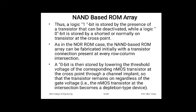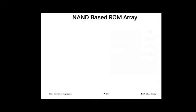A 0 bit is then stored by lowering the threshold voltage of the corresponding NMOS transistor at the cross point through a channel implant. If there is already a channel, the threshold voltage can be made approximately zero, making it a depletion-type transistor that remains ON regardless of gate voltage. The NMOS transistor at that intersection becomes a depletion type device, not an enhancement type.